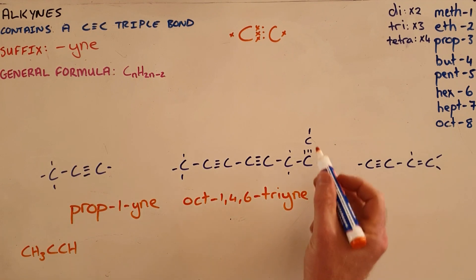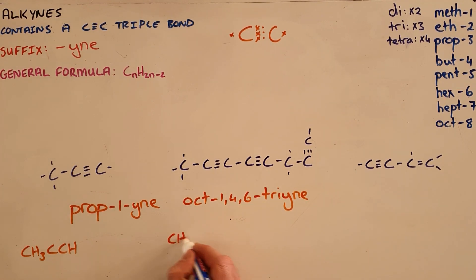And the condensed structural formula for this molecule can be written as CH3 followed by a C followed by another C-C-C-C-CH2-CCH.